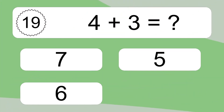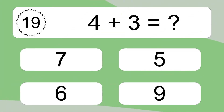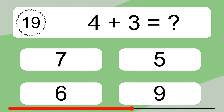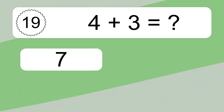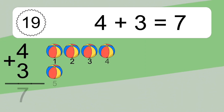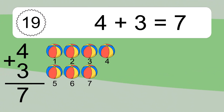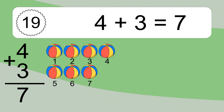4 plus 3 equals what? 4 plus 3 equals 7. Let's count it. 1, 2, 3, 4, 5, 6, 7.